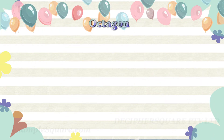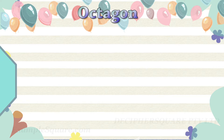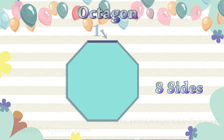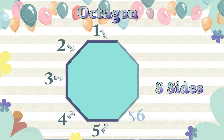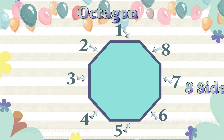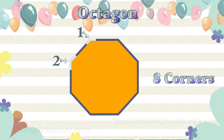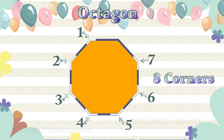An octagon shape is a shape with eight sides and eight corners. This is an octagon. It has eight sides: one, two, three, four, five, six, seven, eight. And it has eight corners: one, two, three, four, five, six, seven, eight.